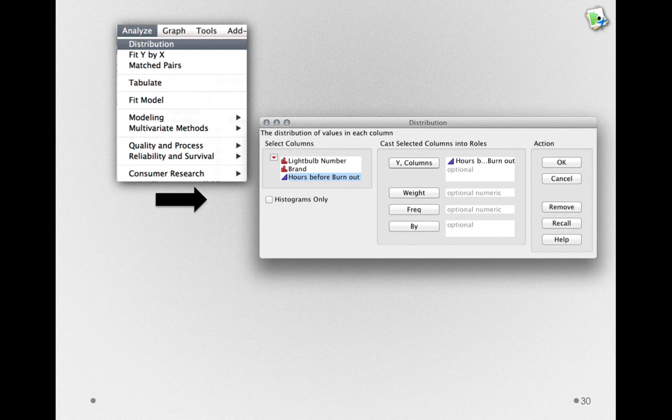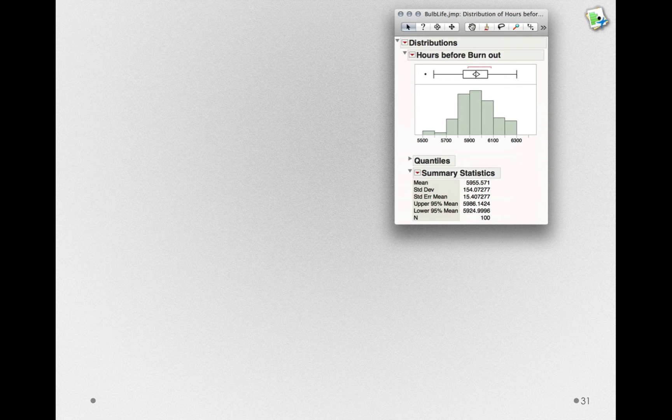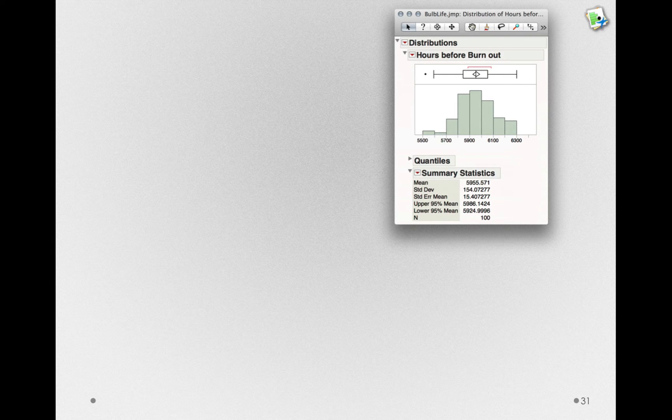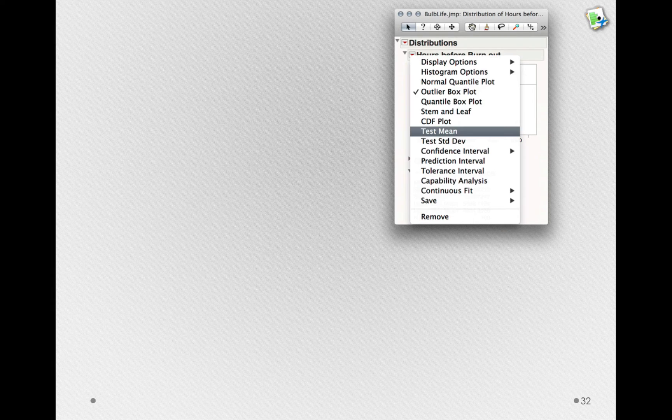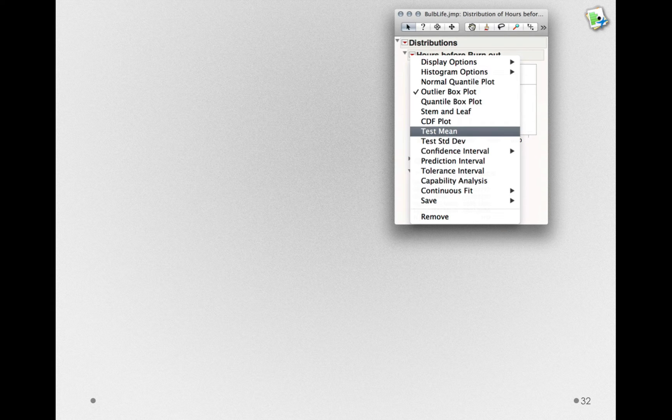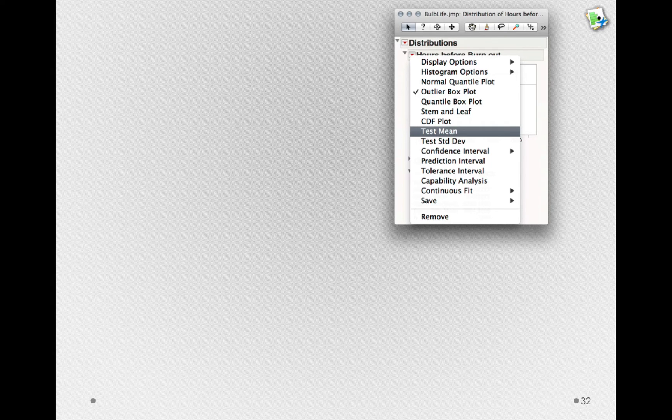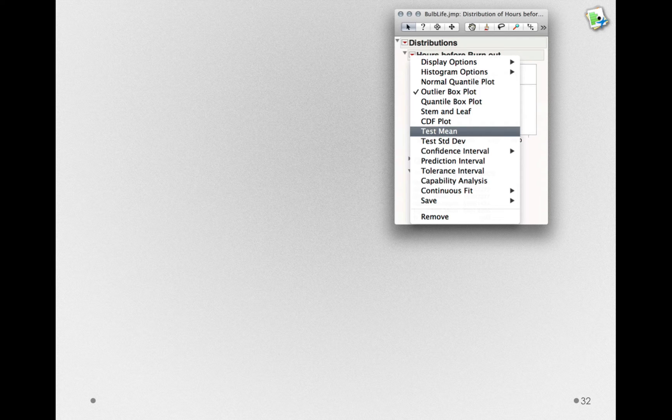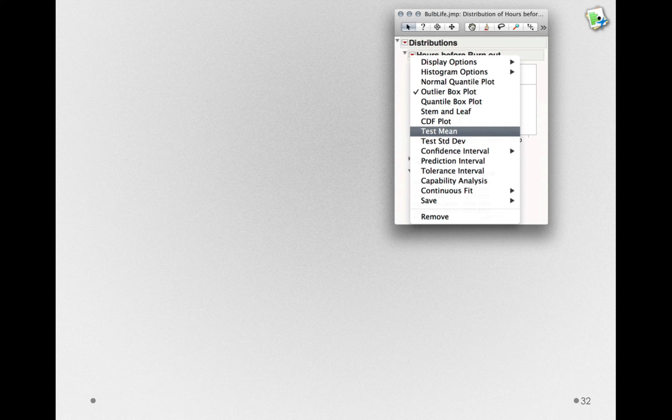What we'll get is a histogram showing the hours before burnout for these 100 bulbs. Under the red triangle, next to Hours Before Burnout, we'll again go to the Test Mean section. Remember, this is still a one-sample hypothesis test, so it makes sense we're using the distribution platform, which is all about one-sample questions.